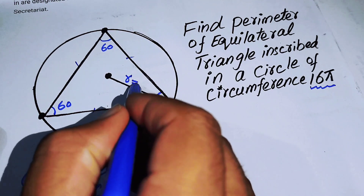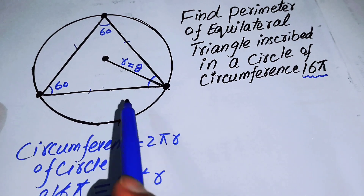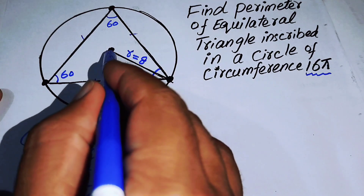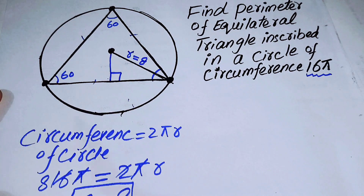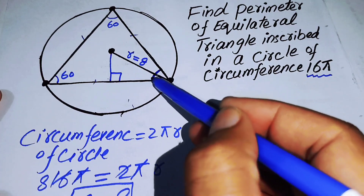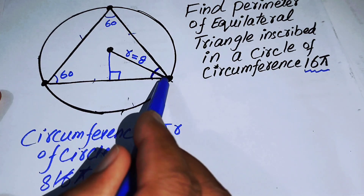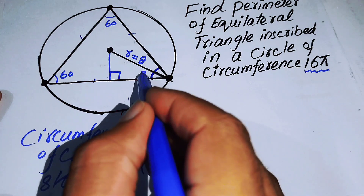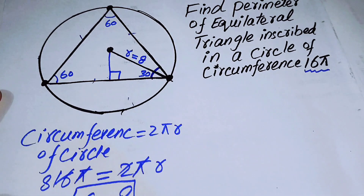Now, in order to find the perimeter of this equilateral triangle, I draw a perpendicular line from the center of the circle to one side of the triangle. This perpendicular bisects the 60° angle of the equilateral triangle, giving us an angle of 30 degrees on each side.